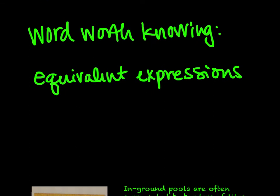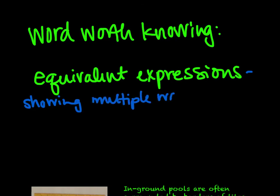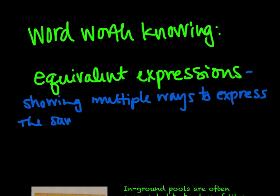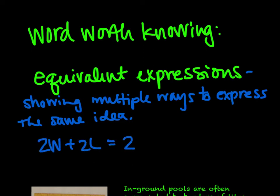Our word worth knowing is equivalent expressions. An equivalent expression is exactly what we've been talking about — showing multiple ways to express the same idea. The perimeter can be expressed as 2W + 2L, or equally as 2 times (W + L): two widths plus two lengths, or width plus length multiplied by two because we have two sets of those things.